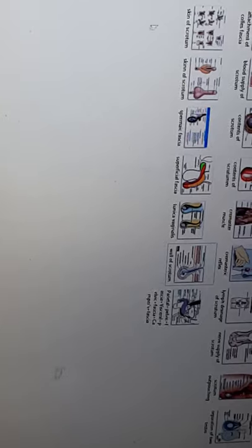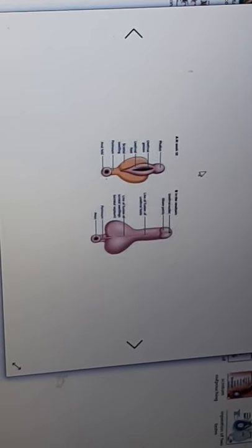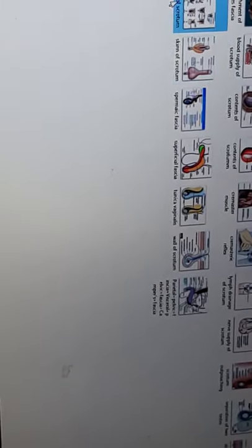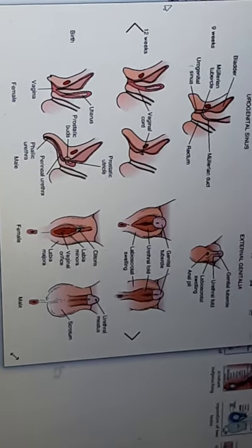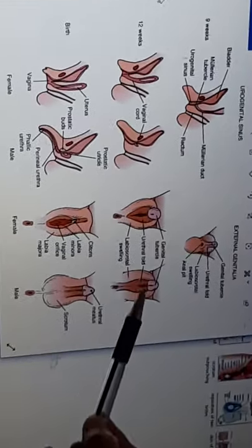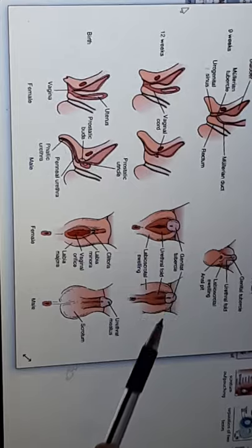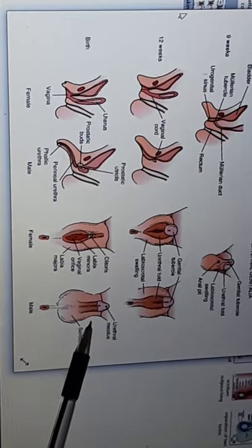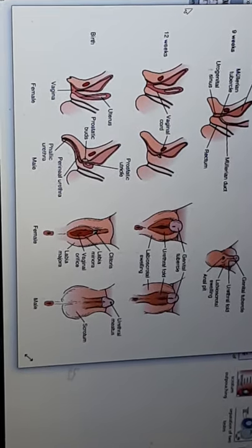The skin of the scrotum is thin, wrinkled, and pigmented. It forms a single pouch with a midline ridge, which is also called the raphe. During development, there are two labioscrotal swellings — in females these form the labia majora, but in males they fuse, forming the scrotum, and the line of fusion becomes the midline raphe present in the scrotal skin.